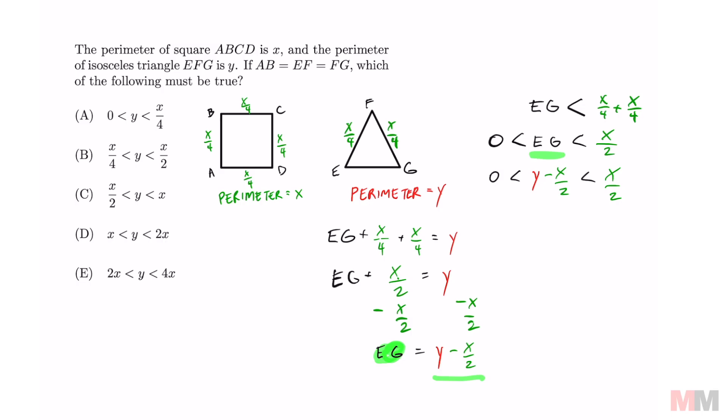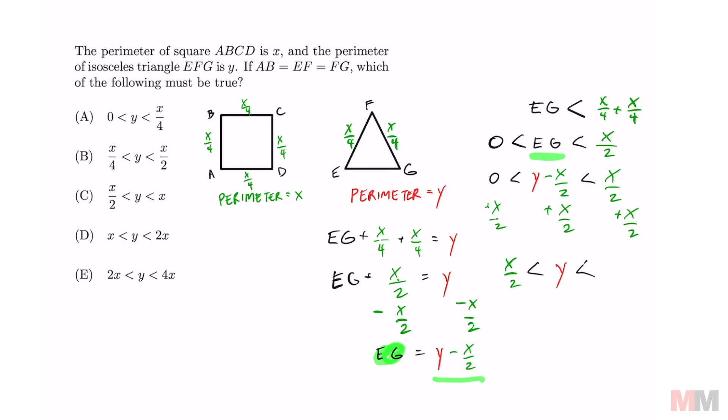And we're going to use that information and substitute that right there. So from here, looking at the answer choices once again, we want to get Y by itself. So the last step is just to add X over 2 to both sides and you will get X over 2 is less than Y, which is less than X over 2 plus X over 2 equals X and that matches letter choice C.